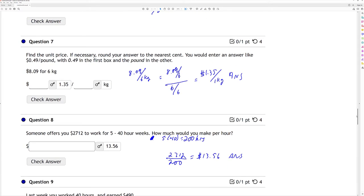For the unit price, if necessary, round your answer to the nearest cent. I have $8.09 for 6 kilograms. So I have my quotient there. I divide my numerator and denominator by 6, and I end up with $1.35 for 1 kilogram.